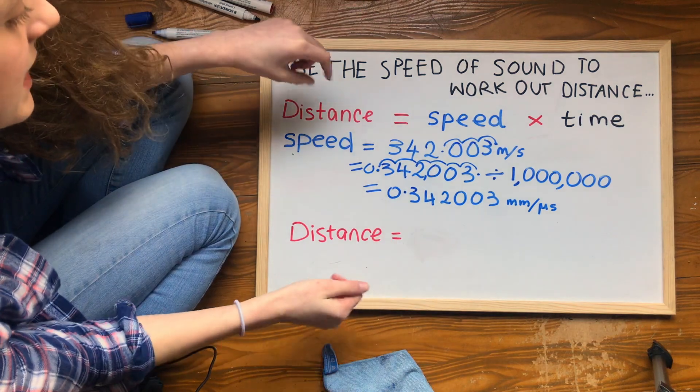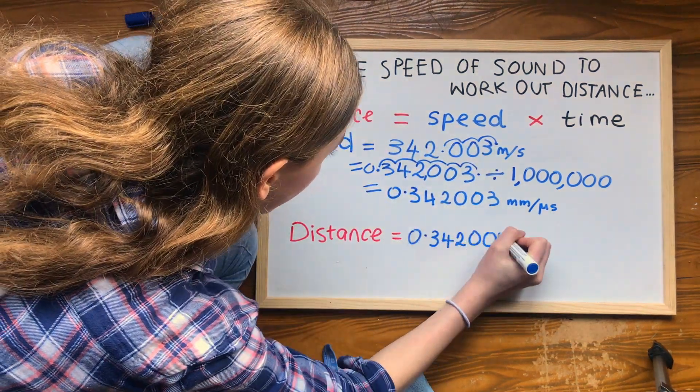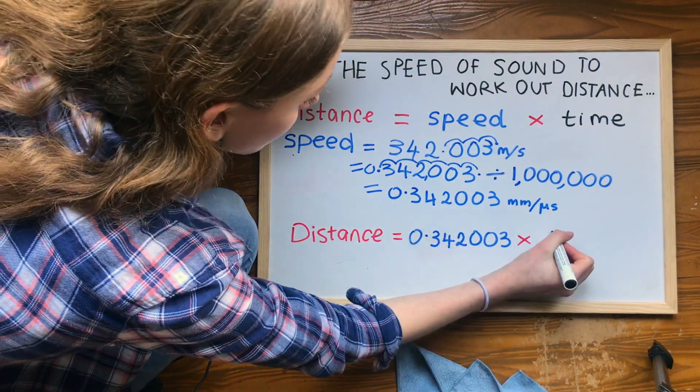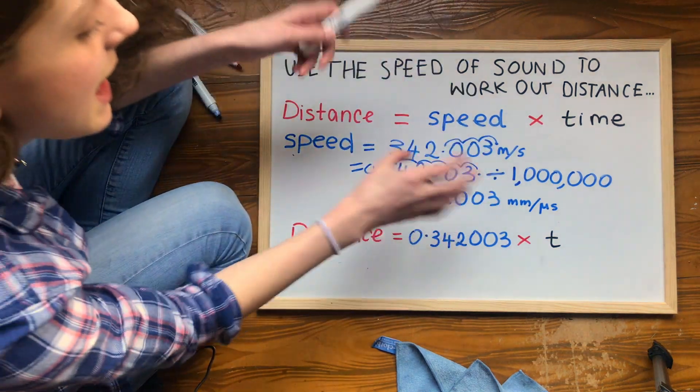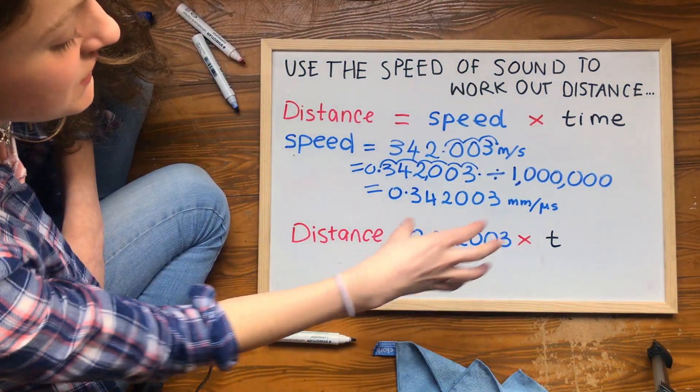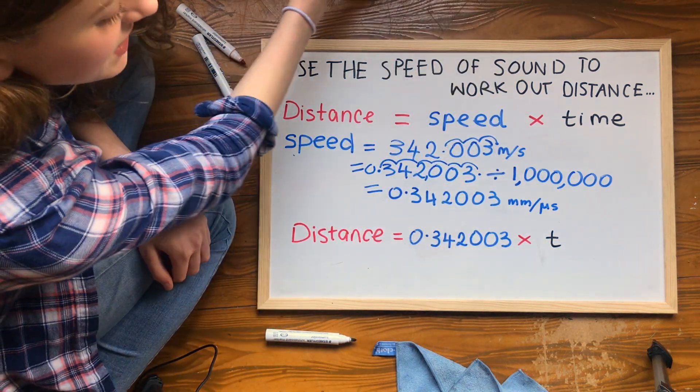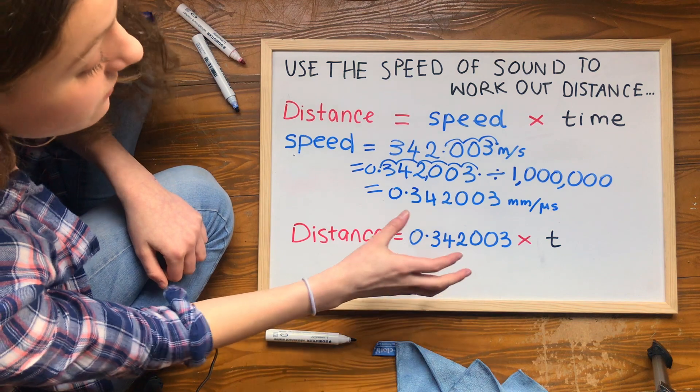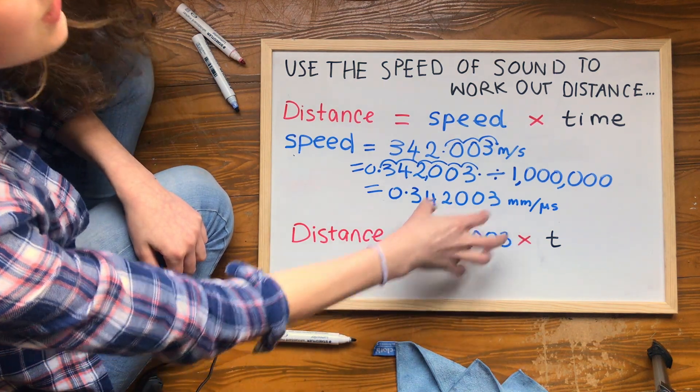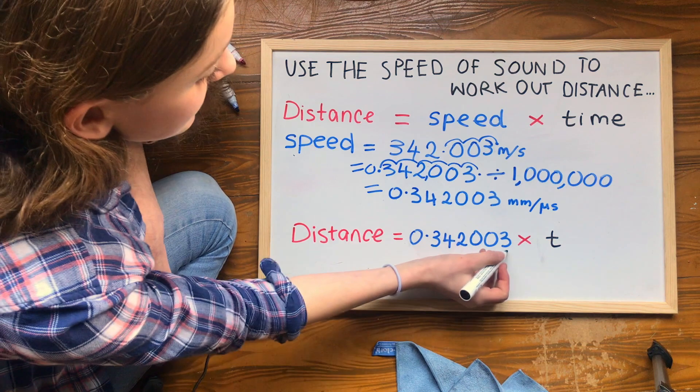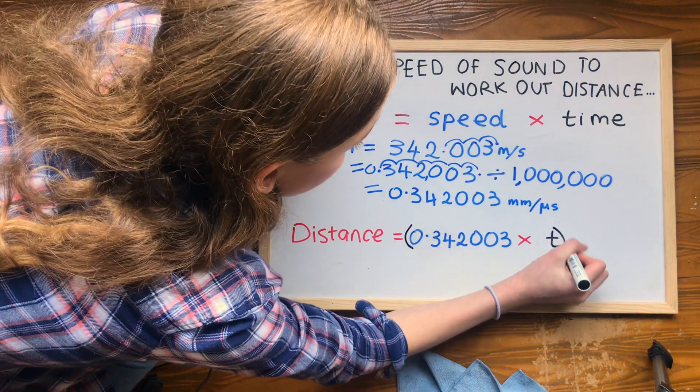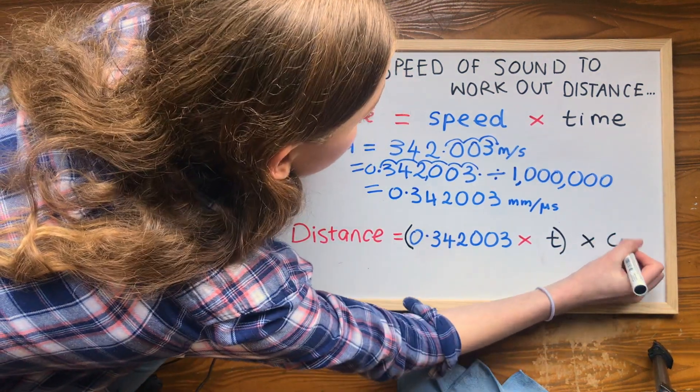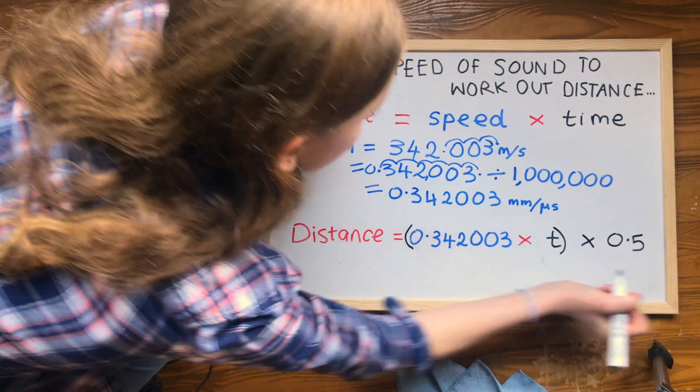So the formula is going to be the speed, which we've just worked out, times by the time. I'll just put a T for time because our device already knows the time it takes for the sound wave to bounce off the surface and bounce back. This will give us the distance from our device to the surface that our sound wave is bouncing off and back again. But we just want half of that, which is the distance from our device to the surface. That's just this times by this, divided by two or halved. And I'm going to do that by taking it all in brackets and timesing it by 0.5. Mathematically, you don't need those brackets, but I think it captures what's happening better.